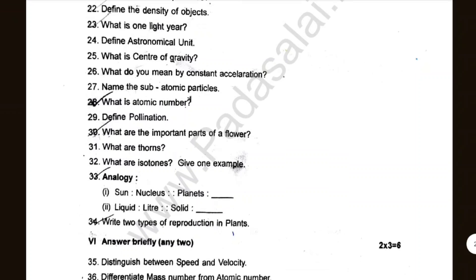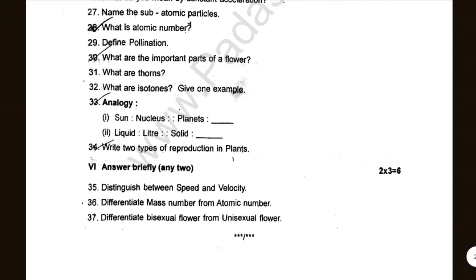The difference between speed and velocity, mass and atomic number, bisexual flower and unisexual flower. So these are very easy. You can study them very closely.